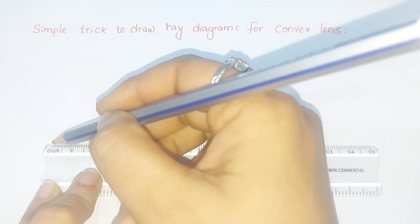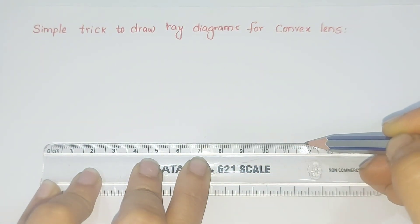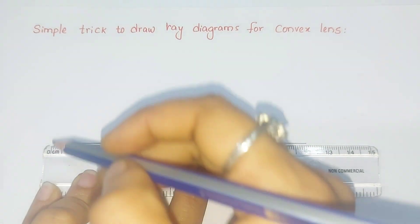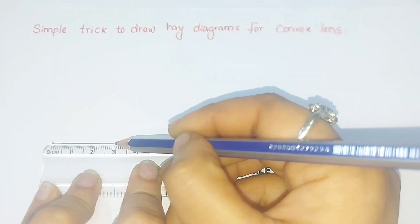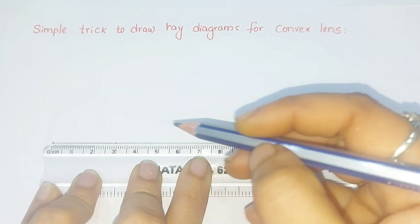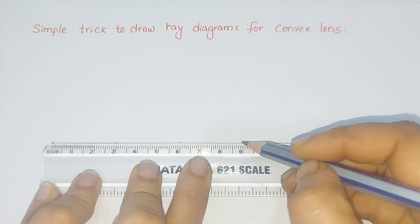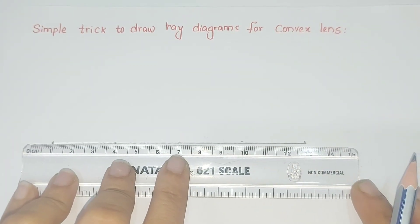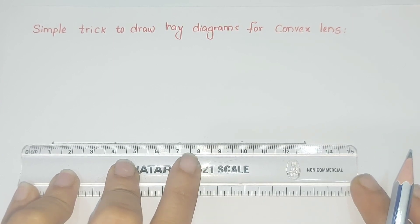First, to draw a ray diagram for a convex lens, we have to draw a straight line of 12 centimeters. After drawing this line, we have to mark the points on the line at 0 centimeters, 3 centimeters, 6 centimeters, 9 centimeters, and 12 centimeters. Now extend this horizontal line on both sides for 1 centimeter.